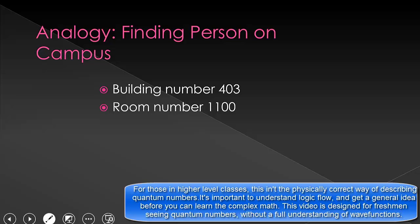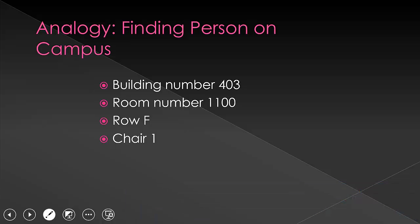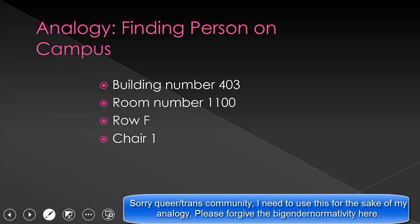We would need both values in order to know which 400 students we are talking about. If we just say room 1100, we would be talking about all the students in all the rooms 1100 across all of campus. Now we can get more specific and say row F. Now we are describing perhaps 10 students. Again, without the first two numbers, F isn't very specific. There can be rows F in any of the lecture halls in any building on campus, and just simply saying row F would describe them all. We could get even more specific and say chair number one. Now we are describing one person. However, if we just said chair one, we would be describing all the chair ones in all the rows, in all the classrooms, and all the buildings on campus.